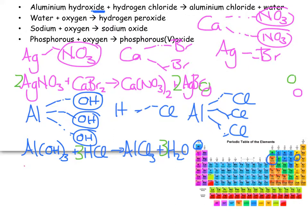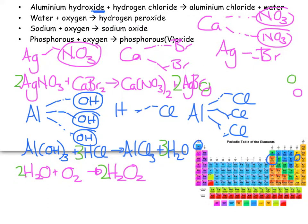Next: water H₂O, oxygen is diatomic O₂, and hydrogen peroxide is on the list as H₂O₂. Balancing: put a 2 in front of H₂O and a 2 in front of H₂O₂ — wait, 2H₂O₂ → 2H₂O + O₂. Four hydrogens on each side, and 2 + 2 = 4 oxygens on the left, 2 + 2 = 4 oxygens on the right. Balanced.